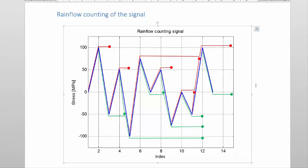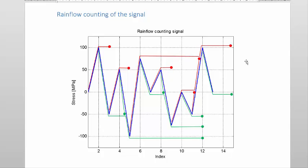And that is the reversals. Each line represents one reversal as we would do it graphically on the signal. In the next presentation I will show you how to convert this to values and to a stress spectrum.